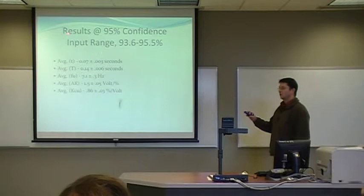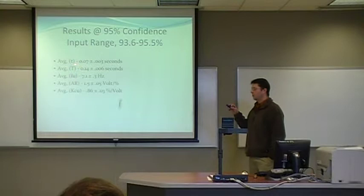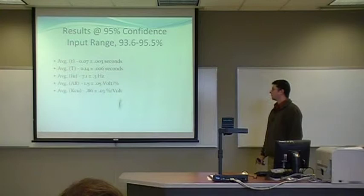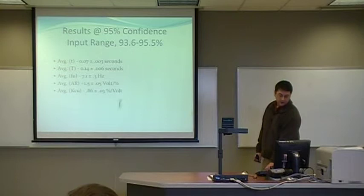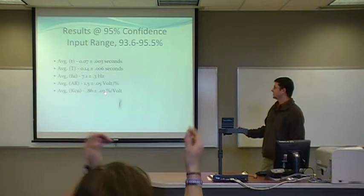To kind of conclude what we got, as we took values from each of these cycles, took the average value from the standard deviation, at 95 percent confidence level for the shift value, it was about 0.07 seconds plus or minus 0.003. The period was about 0.14 seconds, which of course was plus or minus 0.006 seconds. The ultimate frequency average was 7.1 hertz plus or minus 0.3. The amplitude ratio was 1.5 plus or minus 0.05 volts per percent. And the ultimate controller gain was found to be 0.86 plus or minus 0.03 percent per volt.